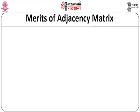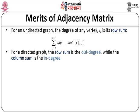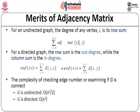The merits of the adjacency matrix: for an undirected graph, the degree of any vertex is its row sum. For a directed graph, the row sum gives the out-degree and the column sum gives the in-degree. The complexity of checking all edges is O(n²/2) for undirected and O(n²) for directed graphs.